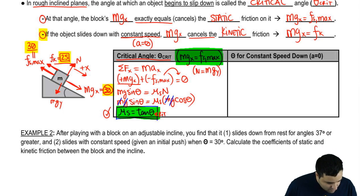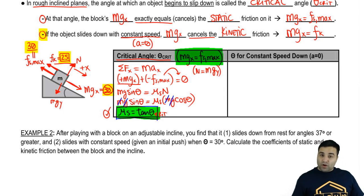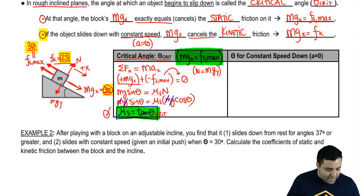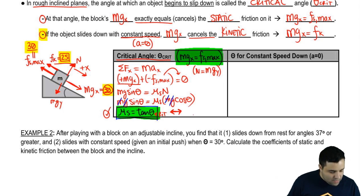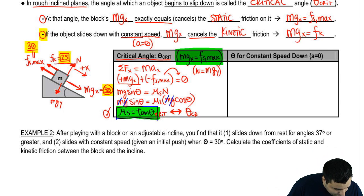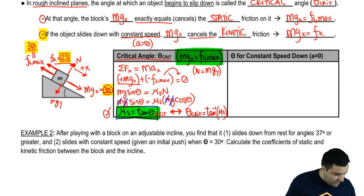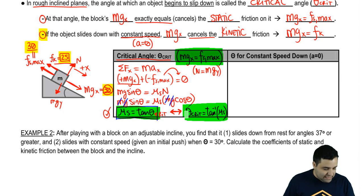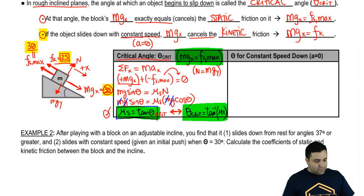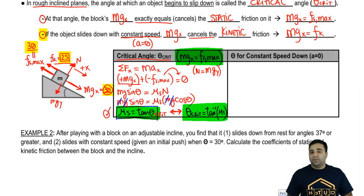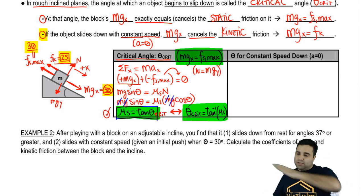The equation can be rearranged: theta-critical is the arc-tangent of mu-static. These two equations are equivalent — you get from one to the other very easily. Interestingly, you can use this to experimentally determine the coefficient of friction between a block and an incline.